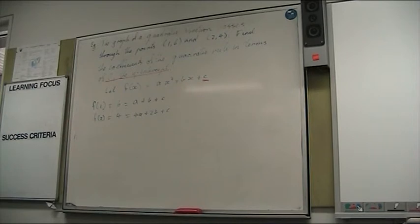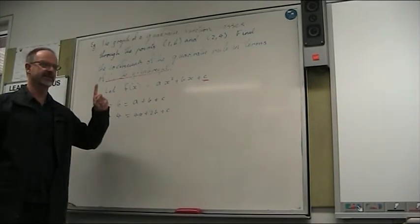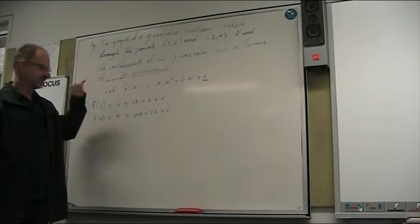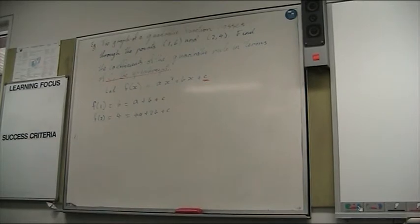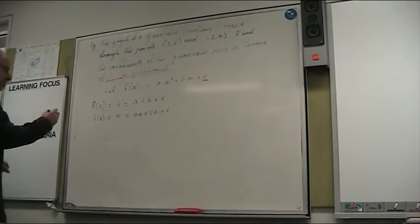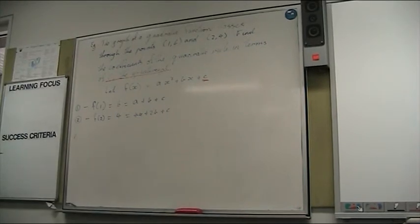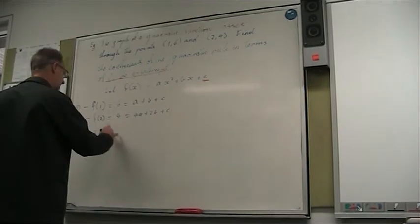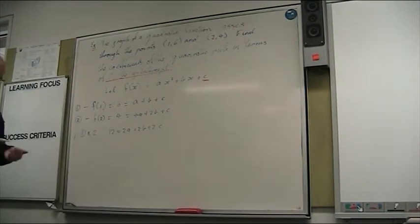So now we've got to solve simultaneously, but we've got to be a little bit careful, because straight away we probably look at this and go, okay, we can subtract them and we'll eliminate the c. But in the question, we don't want to... Yeah, exactly. We want to keep the c, so we need to solve simultaneously and eliminate the a and the b. So if I call this equation 1 and then equation 2, and then if I do equation 1 by 2, I would get 12 equals 2a plus 2b plus 2c.